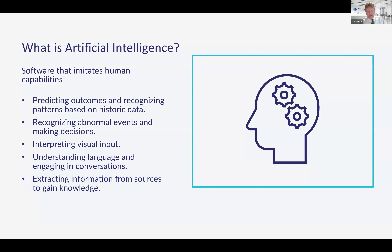Computers have been really good at math and programming for a long time. But there are some things that computers have not always been good at compared to humans. Computers weren't as good at talking, at art, at language. I got a degree in German and thought I could always be a translator because computers would never be good at translating — but they are. Computers are really good at translating nowadays.